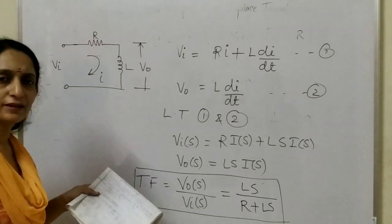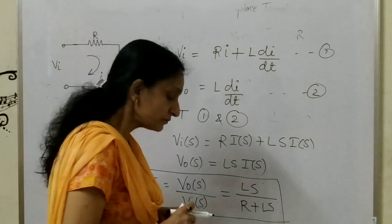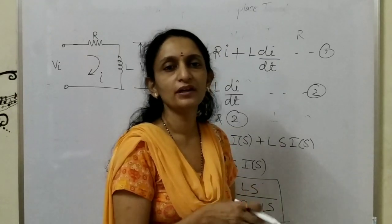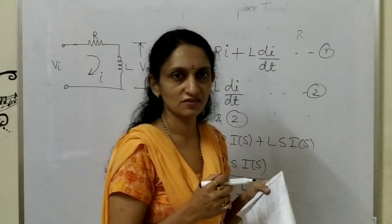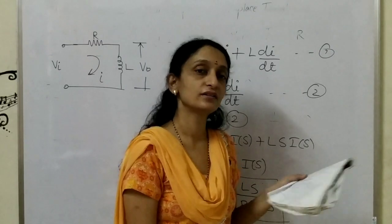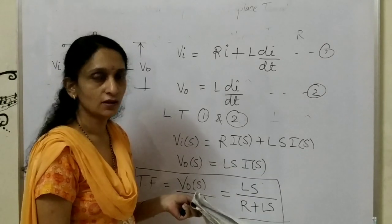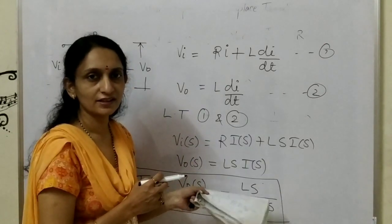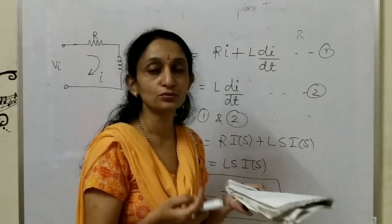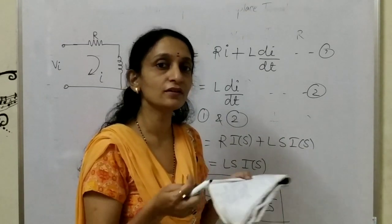This is for the simple RL circuit. There can be combinations with R, L, and C as studied in network theory. Depending on the number of meshes, you have to obtain the equations, take the Laplace transform, and rearrange to get the transfer function. In some cases the number of meshes may be two, giving two current equations. You have to rearrange those equations to eliminate one variable.